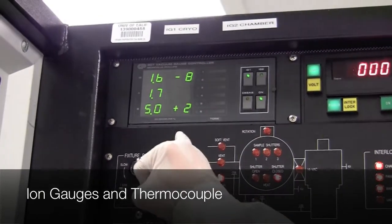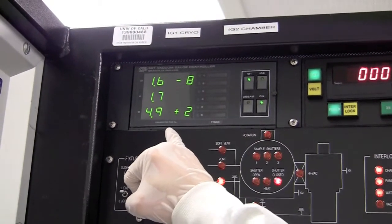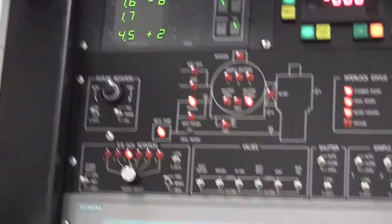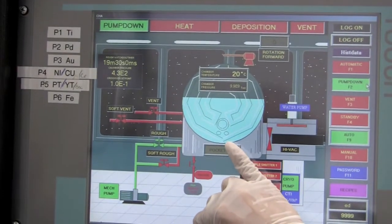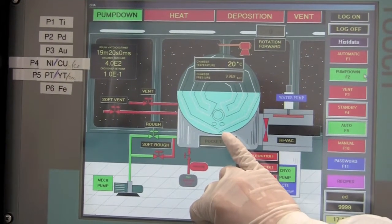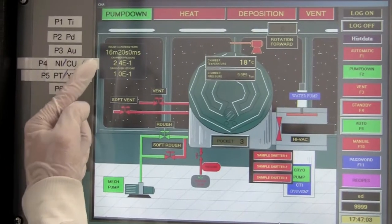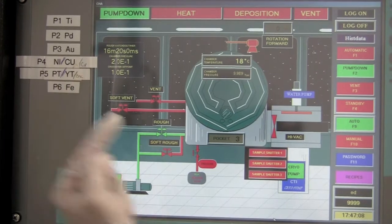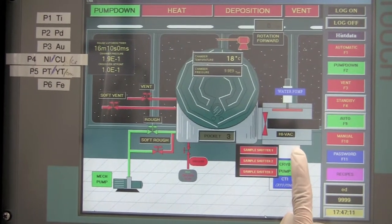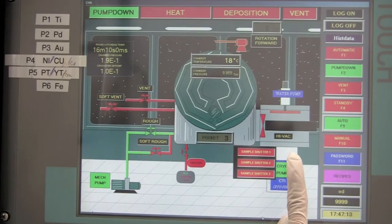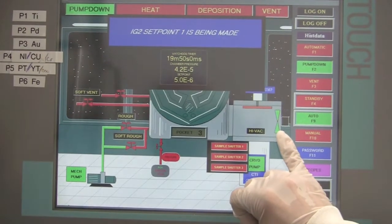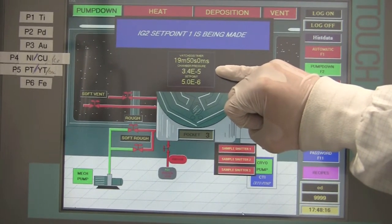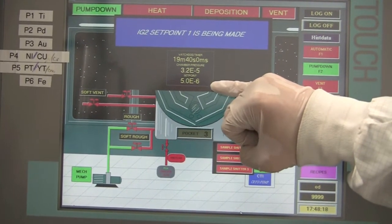Ion gauge one is for the cryo and ion gauge two is for the chamber. During roughing we can see the pressure drop from the reading from the thermal couple. We can also verify the pressure drop in the chamber by looking at the cartoon in the graphical user interface. After the chamber pressure reaches the set point of 1 times 10 to the minus 1 torr, the high vac valve should open allowing the chamber to pump down much faster. Now we can see that the high vac is open and the pressure has dropped to 10 to the minus 5. And now it's going to pump to the next set point 5 times 10 to the minus 6.